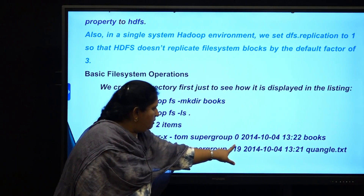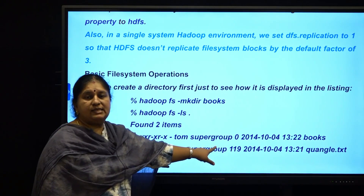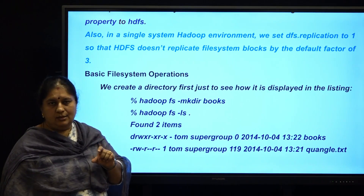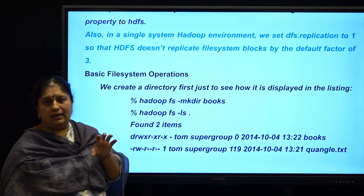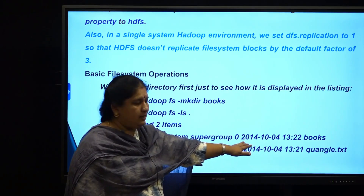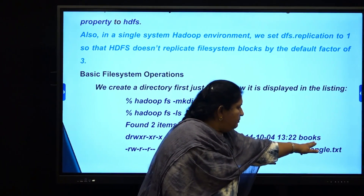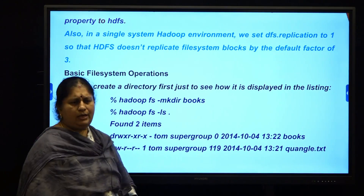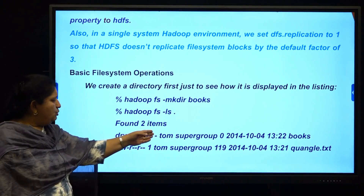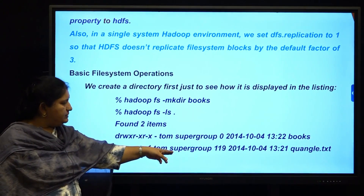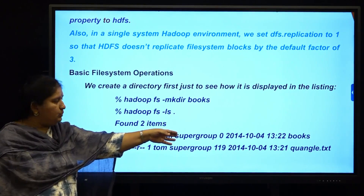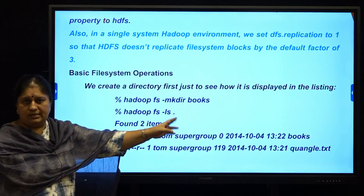Next, you have 0 and 119 here, depicting the size of that particular item. For a folder, the size will generally be 0 since it is given in number of bytes — nothing is calculated for a directory, but files inside will have their byte count. Then comes the date and time of the latest update, followed by the name — 'books' is the folder and inside it there is a text file. So when you see the listing, you see: directory or file, replication factor, owner, group, size in bytes, last accessed date and time, and the name.